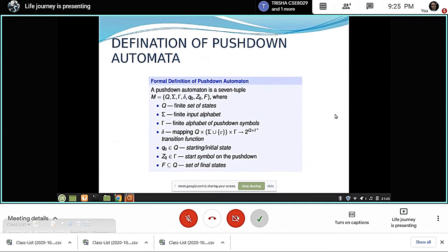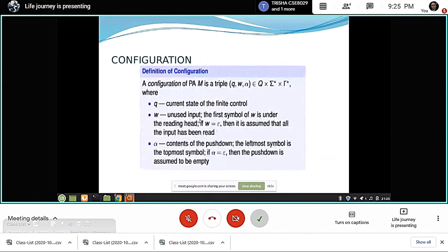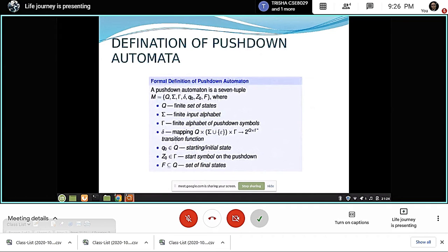A pushdown automata consists of seven tuples as we can see here. The first one is Q, that is the set of states. The second one is the set of input symbols, denoted by sigma. And the next one is the set of pushdown symbols, denoted by tau. And the initial state that is denoted by Q0, and the pushdown symbol called the initial symbol of the pushdown, denoted by Z0. And a set of final states is denoted by F and a transition function is here.